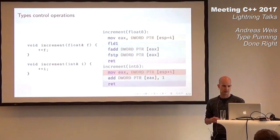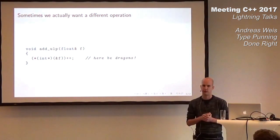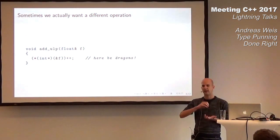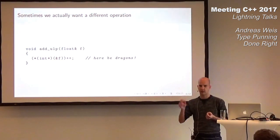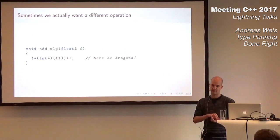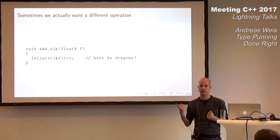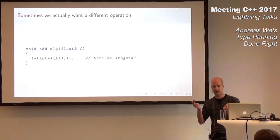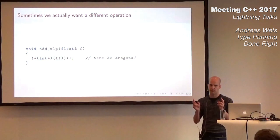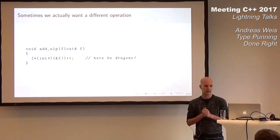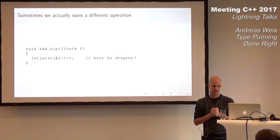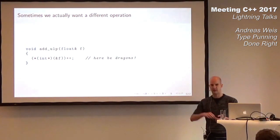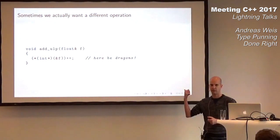Actually, sometimes you do want to do it. One not-so-well-known fact about floating point numbers is: if I have a given floating point number and I want to get the smallest floating point number that is bigger than the number I have, you can actually do that by performing a simple integer increment. This is actually quite difficult to do otherwise. If you then take the difference of those two numbers, that gives you exactly the unit of least precision between those two floats — the ULP.